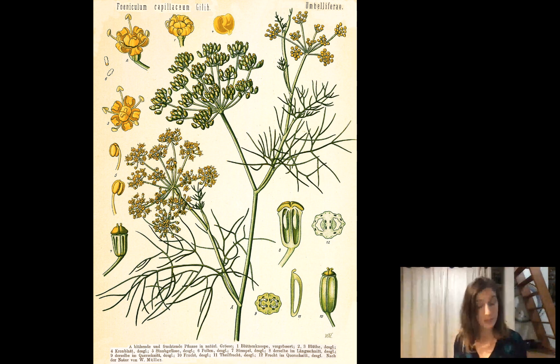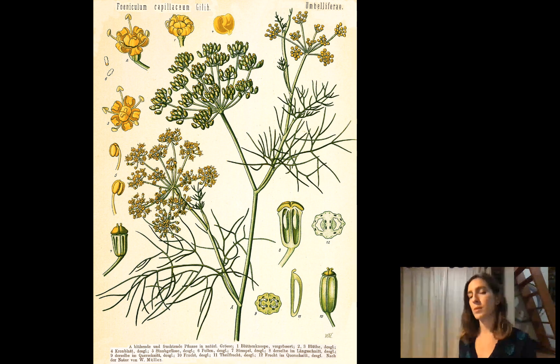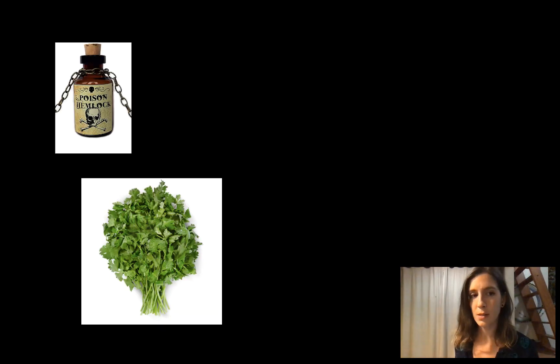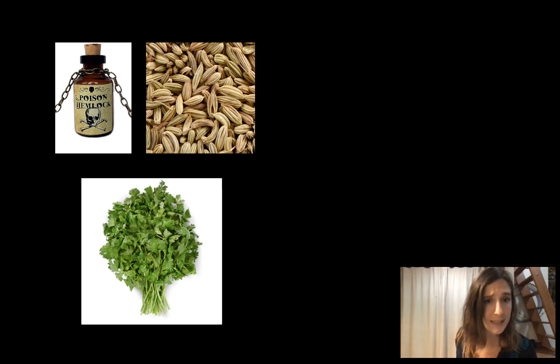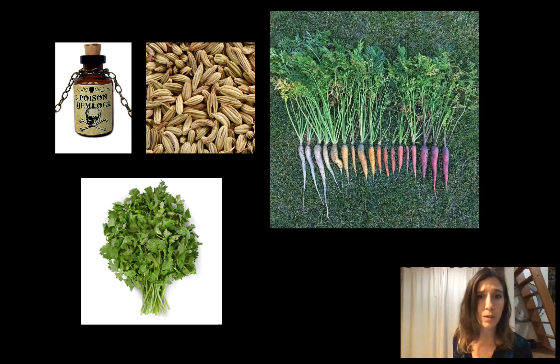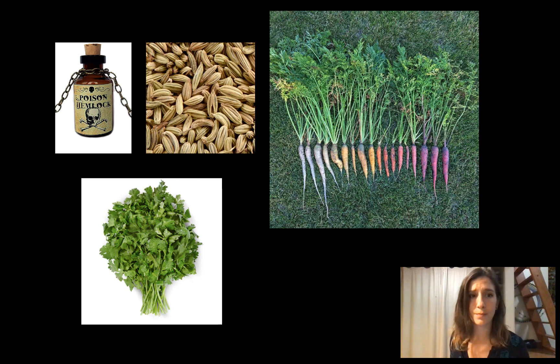Some medicinal stuff — the bad stuff comes in the form of poison and toxins. Poison hemlock, cilantro, fennel, and carrots are all in this family.